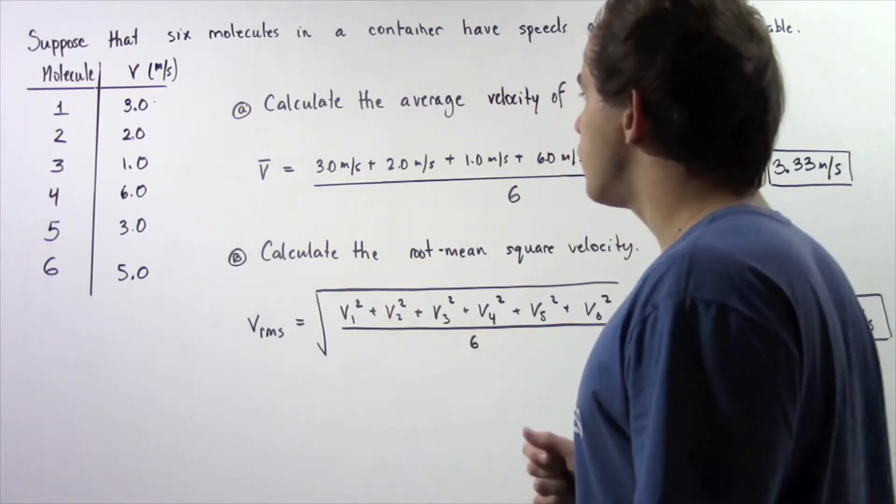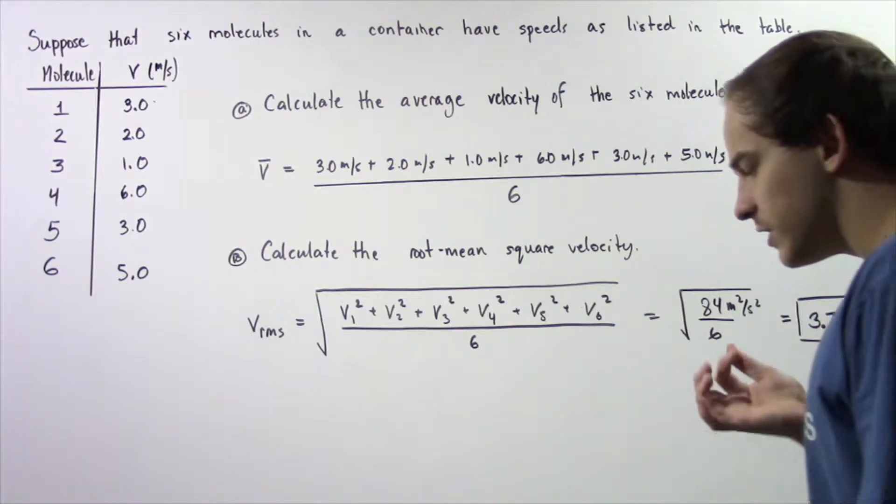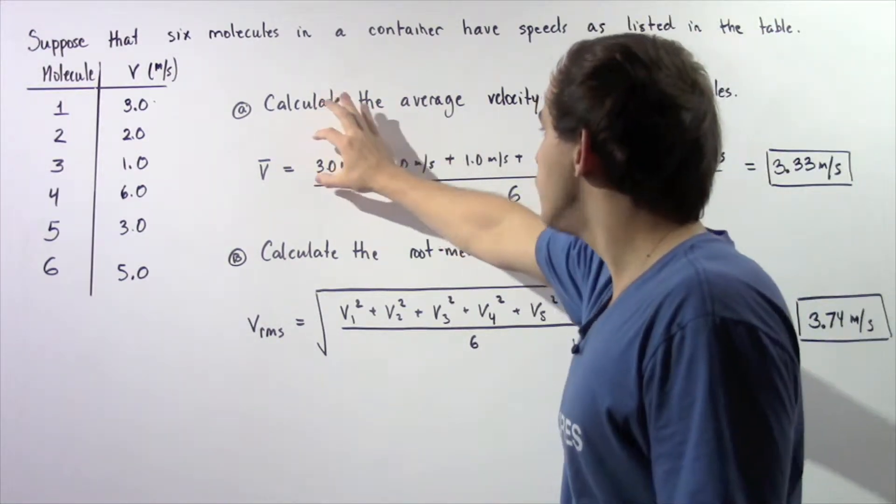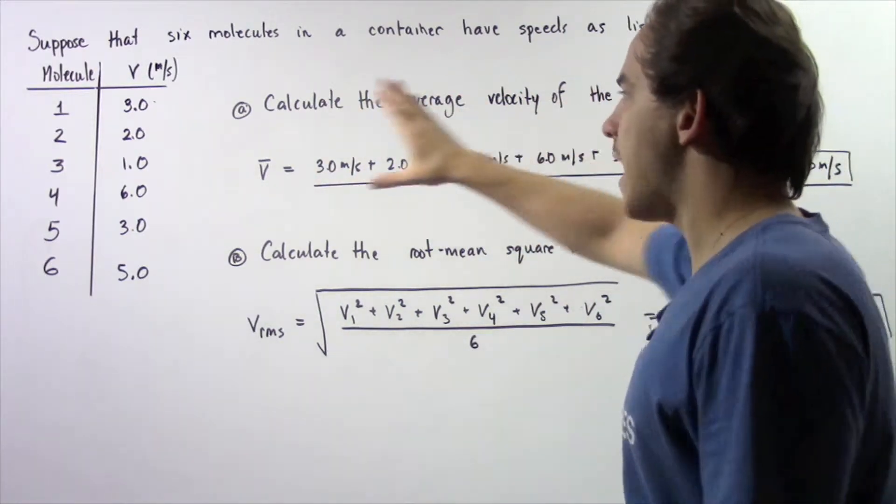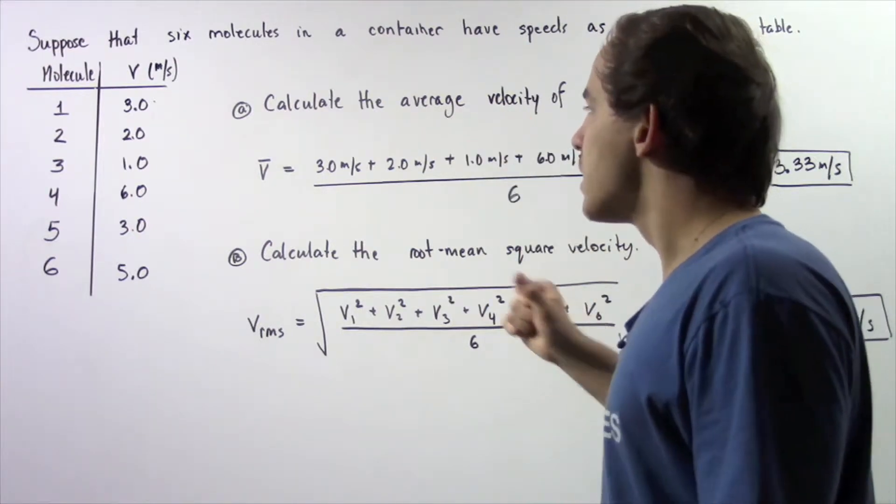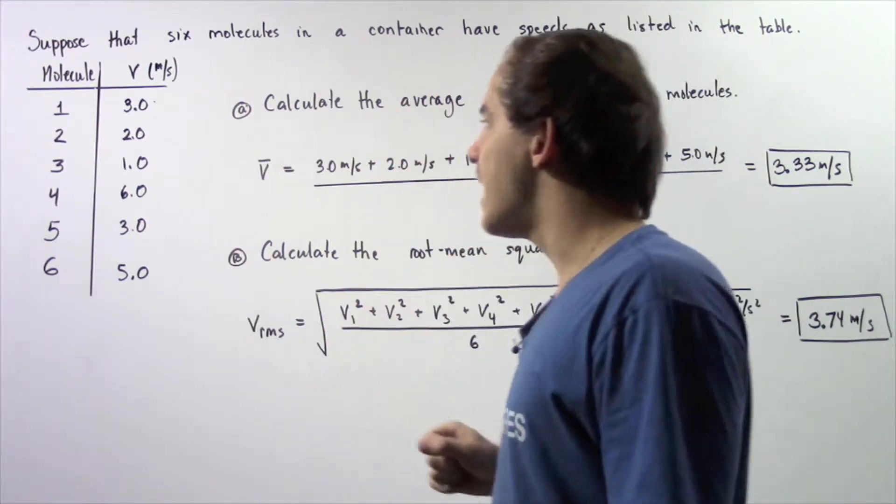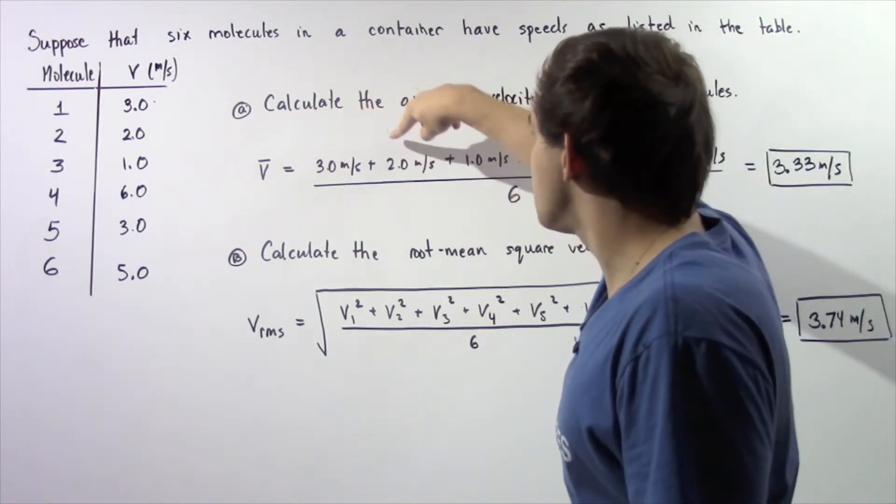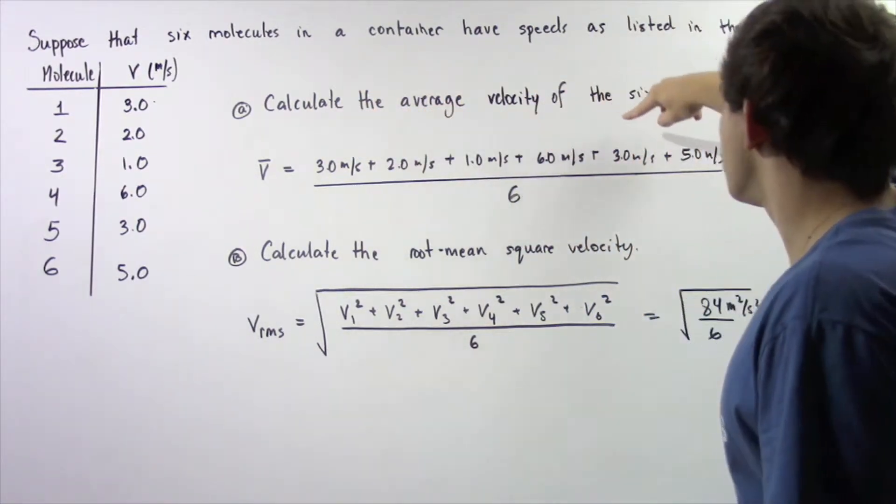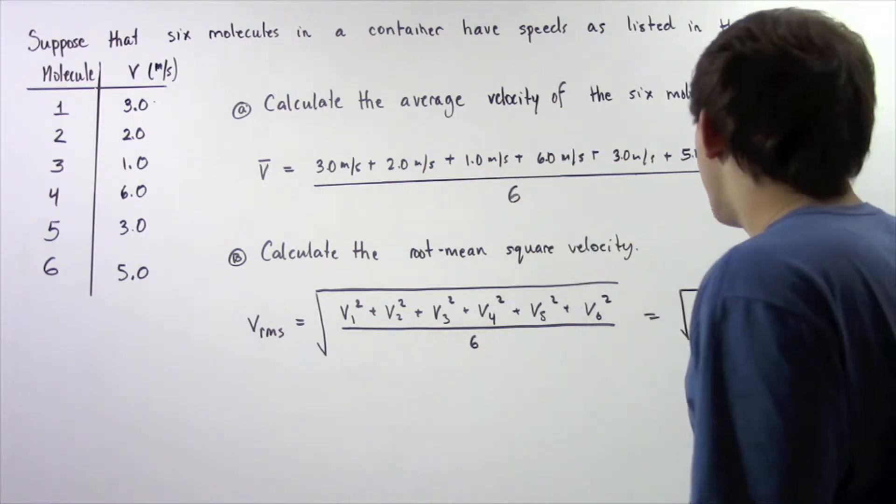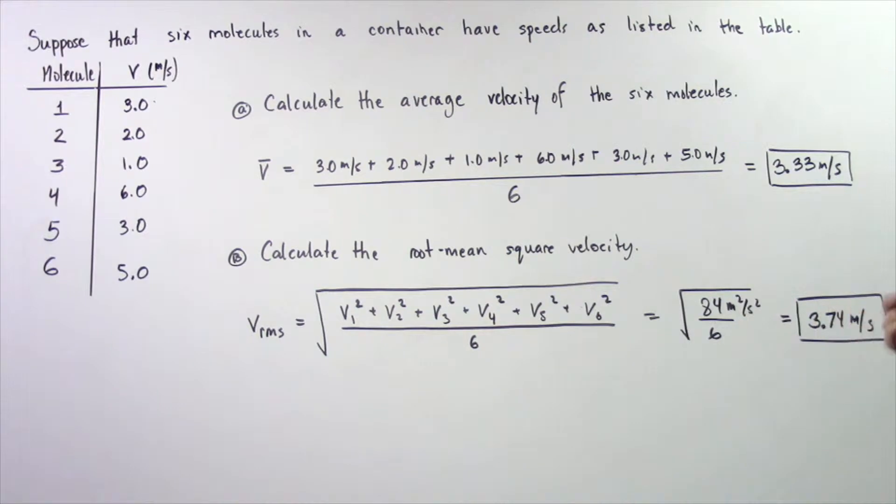Let's begin with part A. Recall that the average velocity by definition is simply the sum of all the velocities of our molecules divided by the number of velocities that we have. We have six different velocities, so this will be six. We have 3 plus 2 plus 1 plus 6 plus 3 plus 5 meters per second divided by 6, and that gives us about 3.33 meters per second.